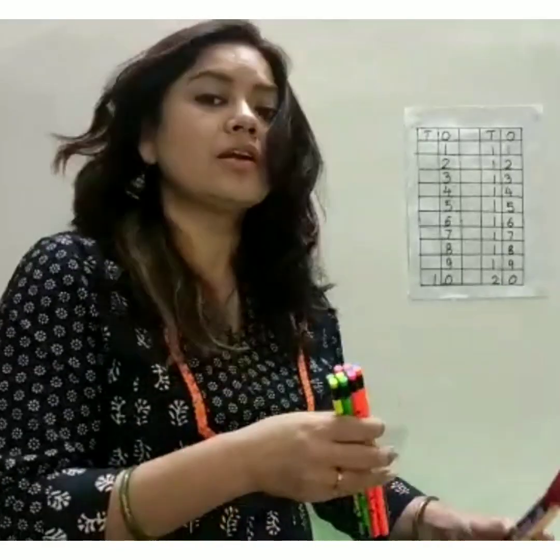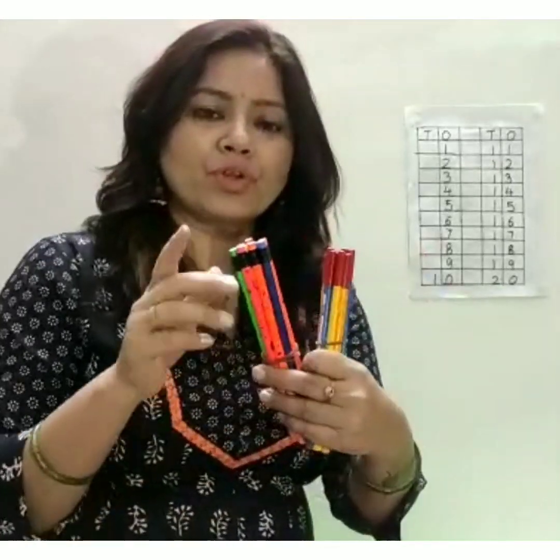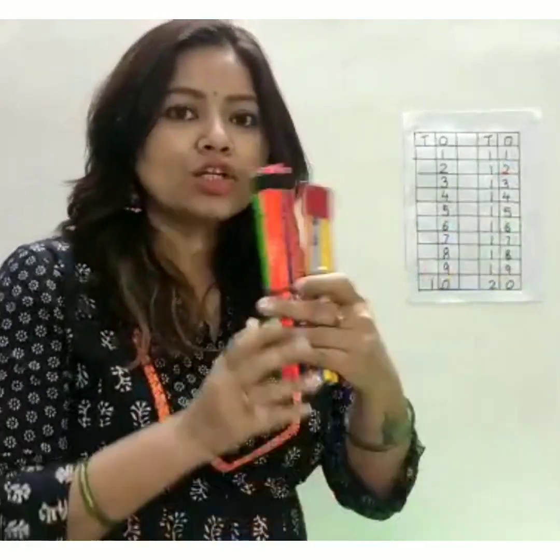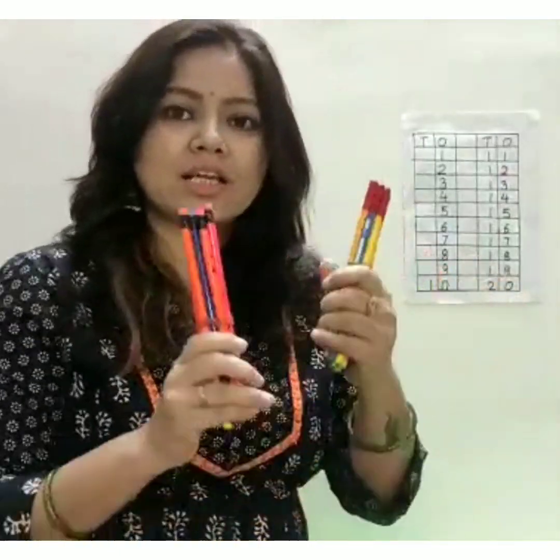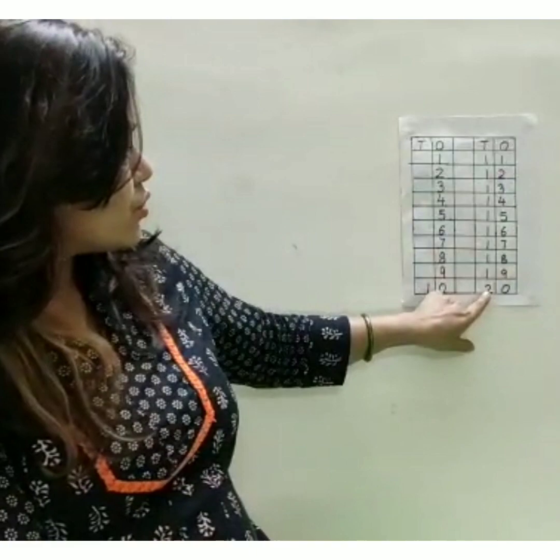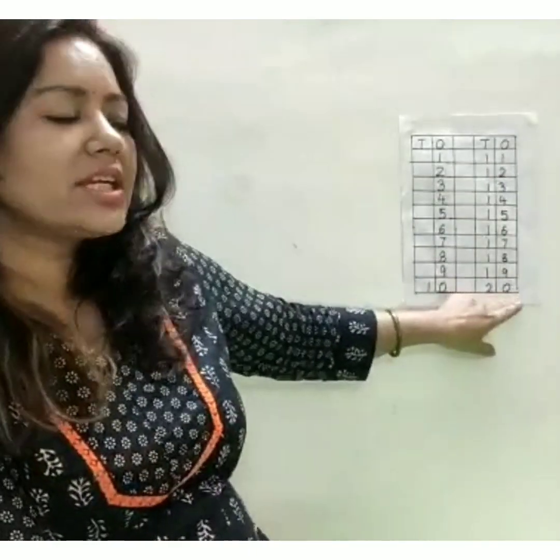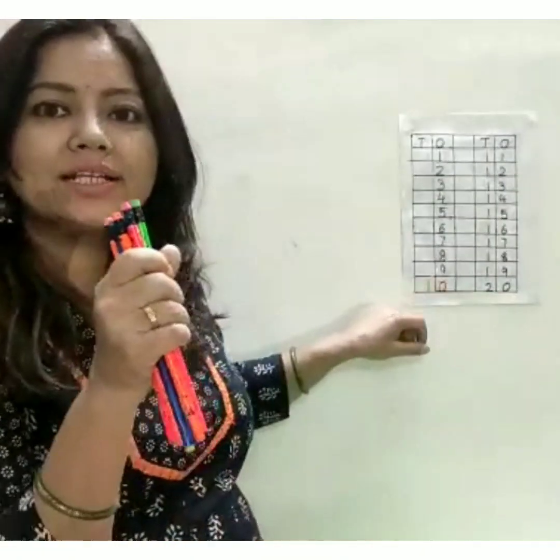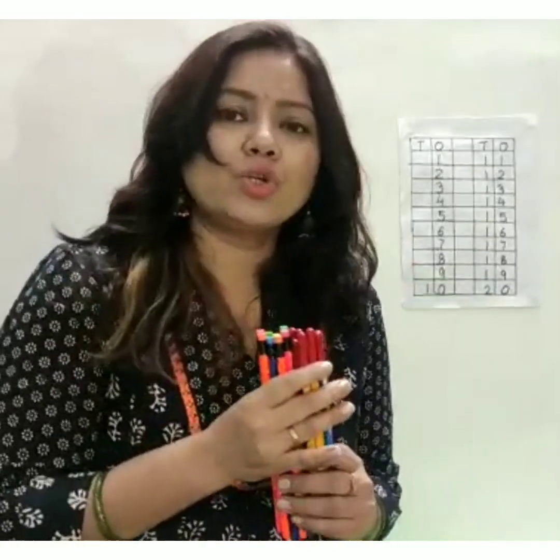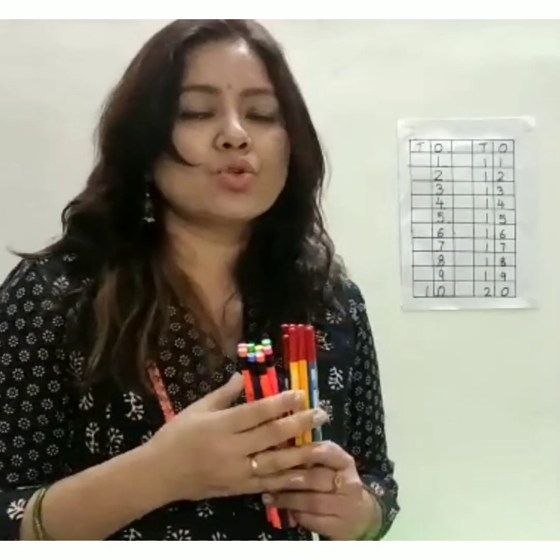So it is a bunch of ten pencils. And see, two tens. Say it again, two tens. And that is two tens, twenty. One ten, two tens. And you can use more objects to count further. Thank you.